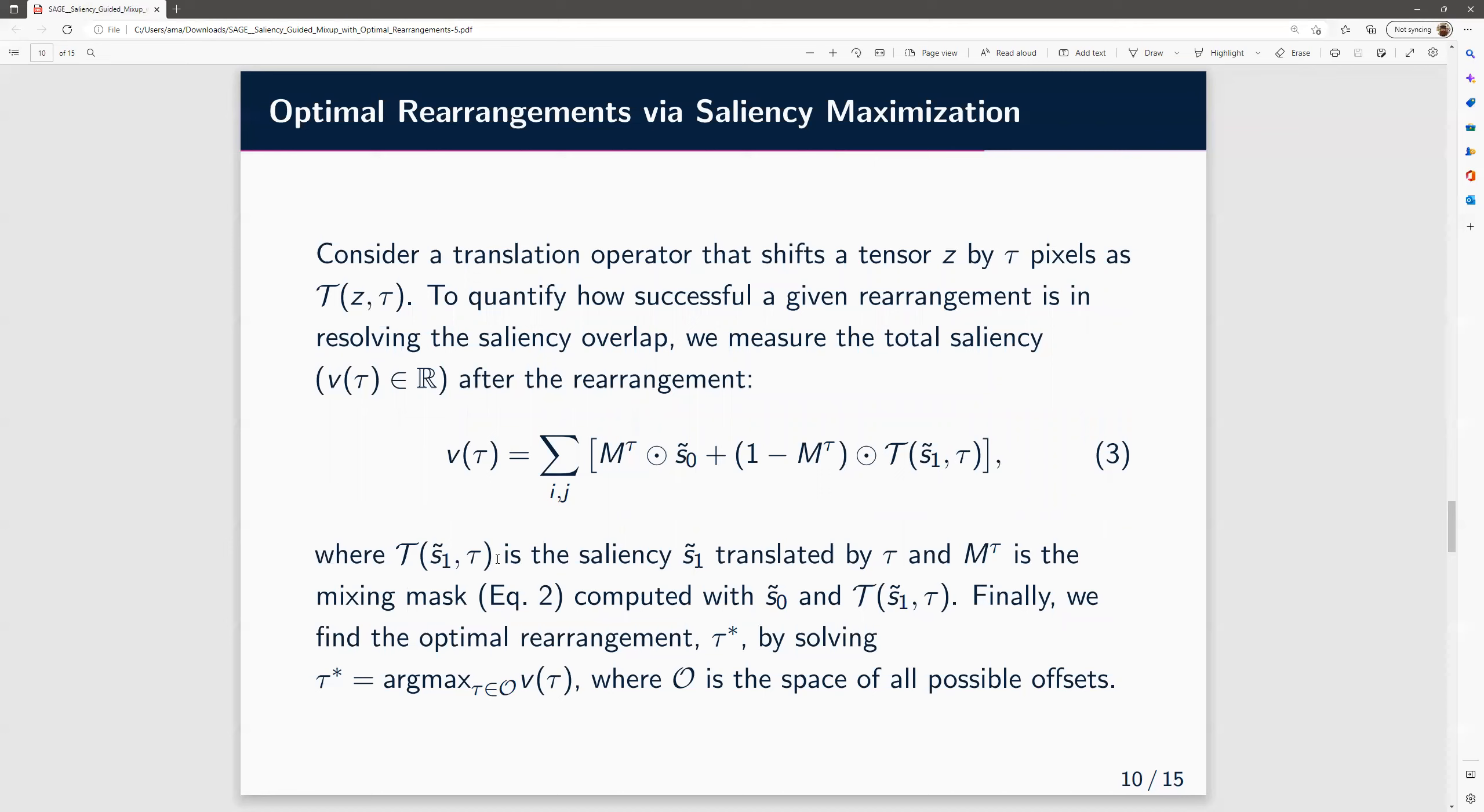Here, T(s_1, tau) is the saliency of s_1 translated by tau. M_tau is the mixing mask computed with s_0 and s_1 with the shift. Finally, we find the optimal rearrangement tau-star by solving the argmax problem, where O is the space of all possible offsets.